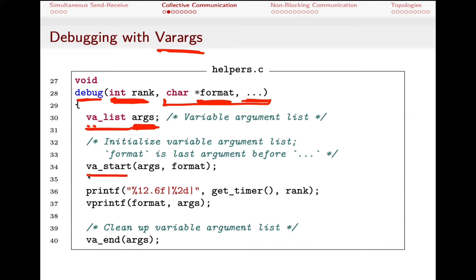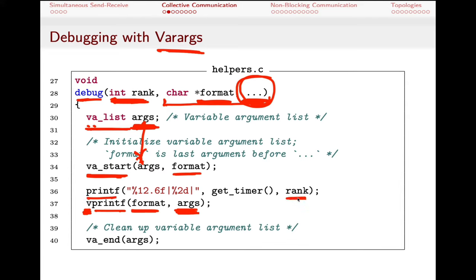This debug helper is useful boilerplate — declare the args, call va_start, call va_end, and between start and end you can access arguments in different ways. It's worth putting in a helper file so you can reuse it in your algorithms. Now, returning to collective communication: MPI_BCAST (broadcast) allows one process to send values to all other processes. Like all communication calls, we specify where the data lives in memory, how many elements, and their type — whether a single integer or a million floats.